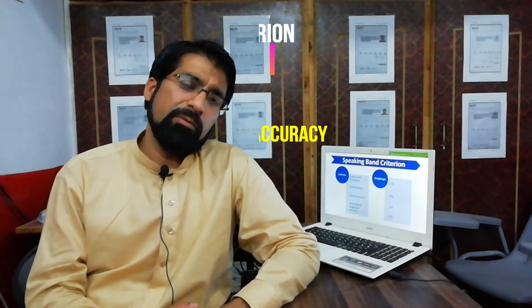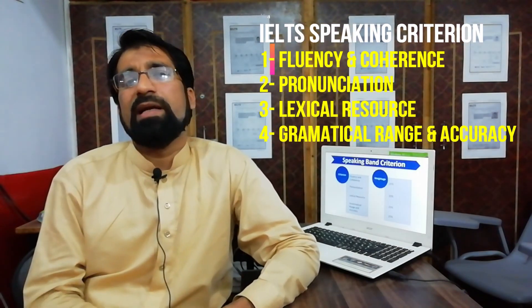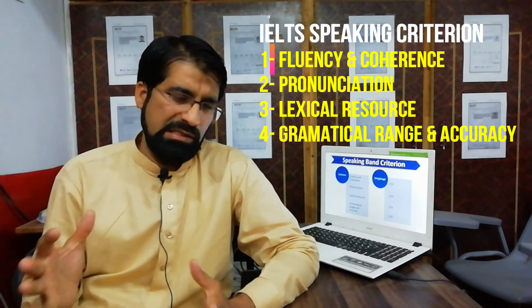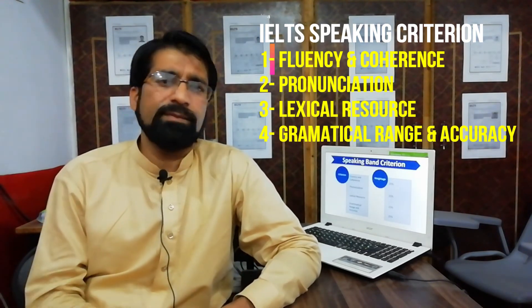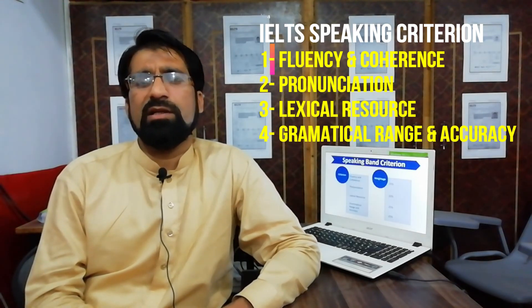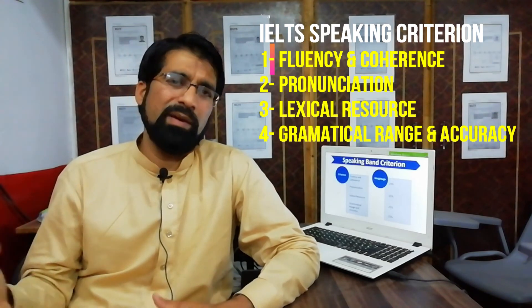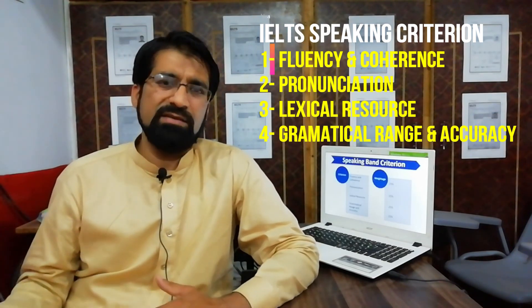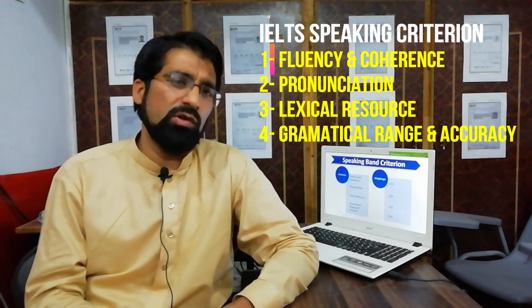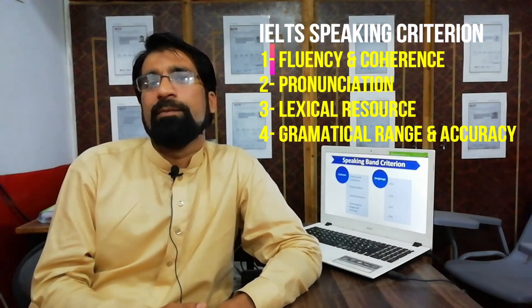The fourth and last criterion is grammatical range and accuracy. Grammatical range refers to the kinds of grammatical structures you use — simple, compound, and complex sentences, active and passive sentences, variation in tenses, and so on. You need to display your grammatical abilities in your speaking. Accuracy means that whatever you say needs to be grammatically correct; otherwise there will be a reduction in this portion.